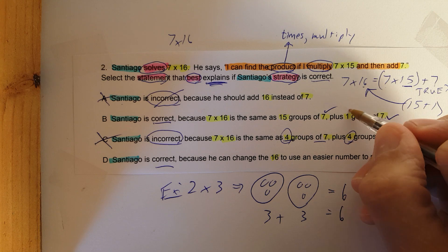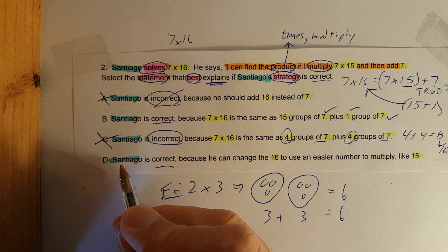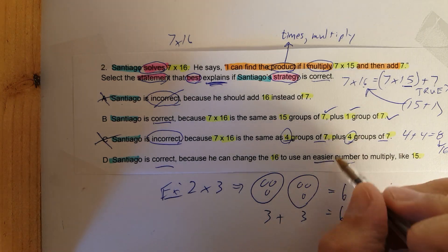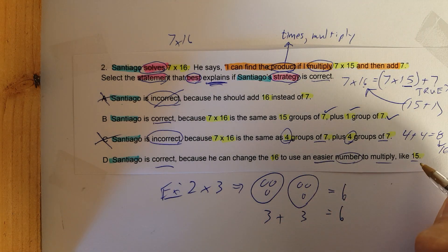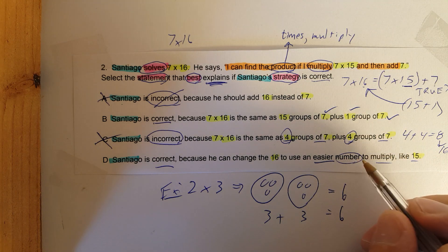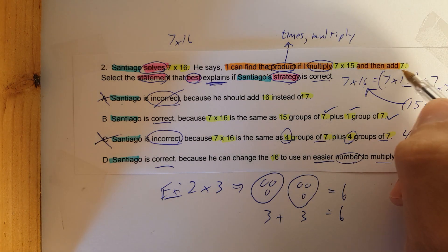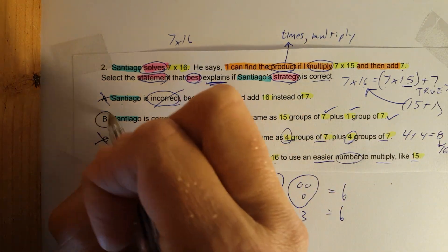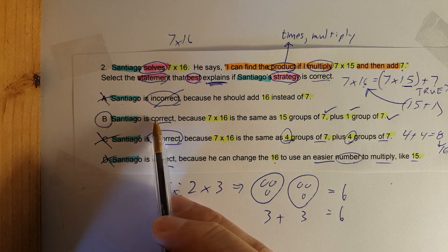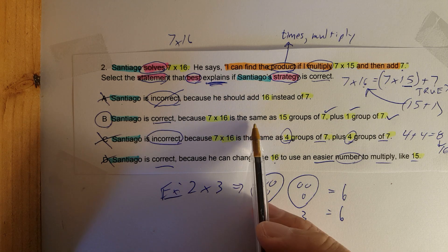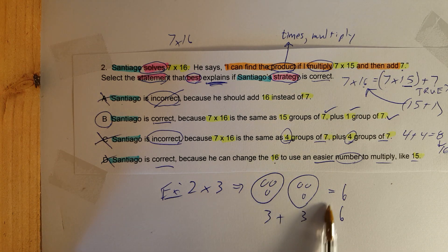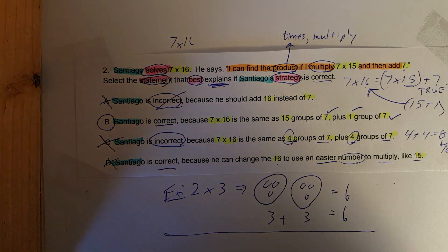Let's just double check, make sure that D is not correct. Santiago is correct because he can change the 16 to use an easier number to multiply like 15. Well, what's wrong with that is you are still leaving away the 1 group of 7 left over, so that doesn't make sense. So that's wrong. So correct answer is B: Santiago is correct because 7 times 16 is the same as 15 groups of 7 plus 1 group of 7.